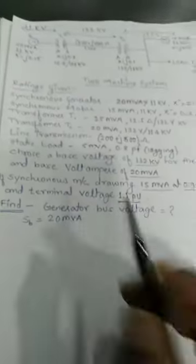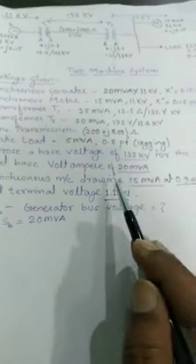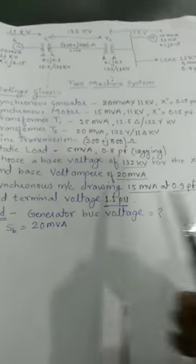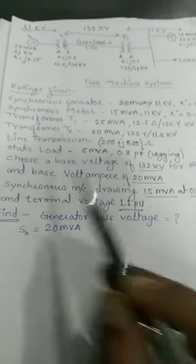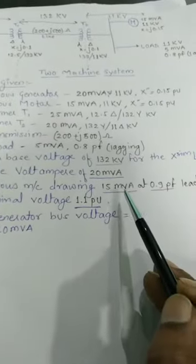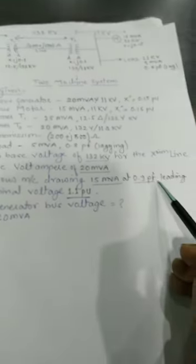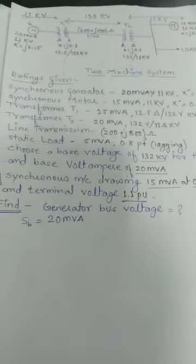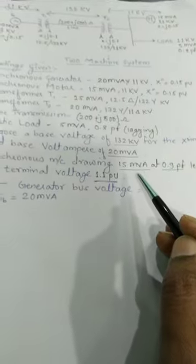Now what you have to calculate is given by a condition: the synchronous machine is drawing 15 MVA at 0.9 power factor leading, and the terminal voltage is 1.1 per unit. So you have to use this data for solving the numerical and calculating the generator bus voltage.